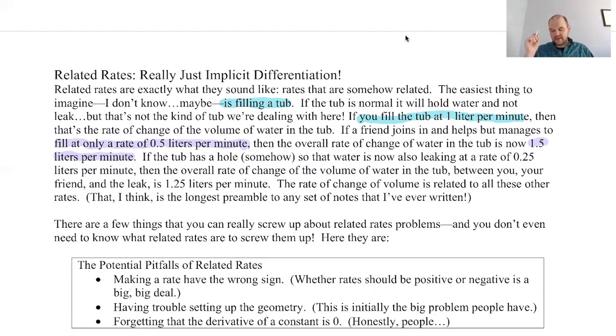So you could have a hole and it's possible that when there's a hole in the tub, even though you're filling it one liter per minute, your friend's doing 0.5 liters per minute, the tub is leaking at a rate of 0.25 liters per minute. So you and your friend are putting water in at 1.5, but it's leaking at 0.25. What's your overall rate of change there? Your overall rate of change is just 1.25. You're still increasing because the amount you're putting in is greater than the amount leaking out, but not by as much as you really think. So these rates are related, right? The overall rate of change is related to all three of them: you, your friend, and the tub leaking. So that's kind of the idea.